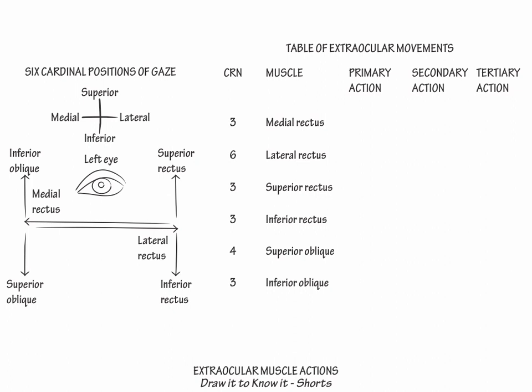Begin with the medial rectus muscle and show that its primary action is adduction, and that it does not have secondary or tertiary actions. Then show that the lateral rectus muscle's primary action is abduction, and that it also does not have secondary or tertiary actions.